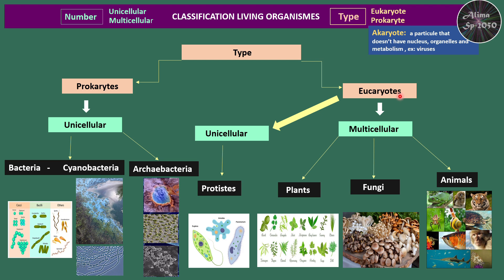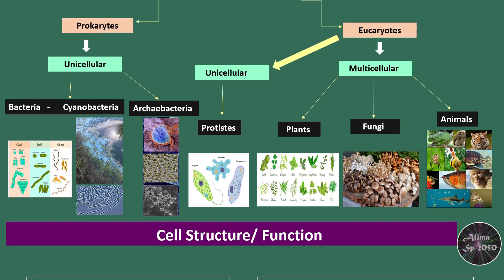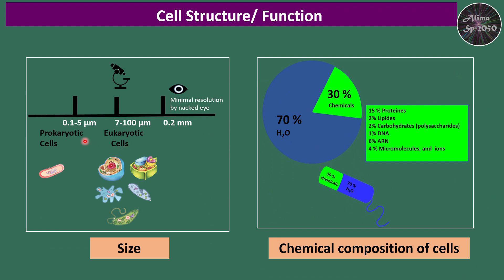For eukaryotes, there are unicellular forms called protists — like Euglena and Amoeba — and multicellular forms represented by plants, fungi, and animals. Regarding size, both eukaryotic and prokaryotic cells are below the minimal resolution of the eye, meaning they can only be observed under a microscope. For the chemical composition, cells are largely composed of water at 70%, and 30% is chemical content represented by proteins, lipids, carbohydrates, DNA, RNA, small molecules, and ions.